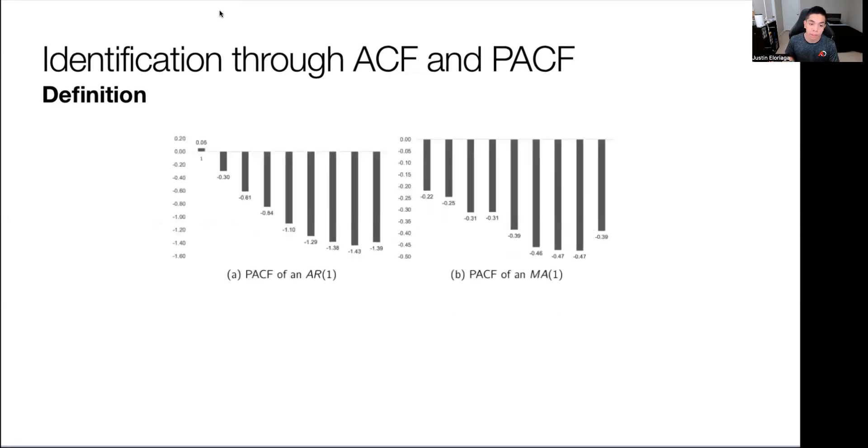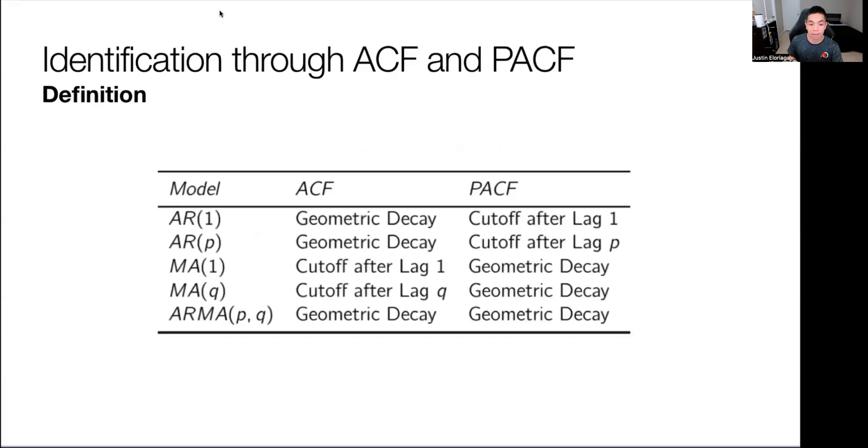But there's more. We can look at the PACF also, the partial autocorrelation function. What we see here is in an MA(1) we see the geometric decay, while in the AR(1) it's the immediate cutoff. It's the reverse story. You see a cutoff after the lag for an AR and geometric decay for the MA. You see the stark differences as you go from PACF and ACF.